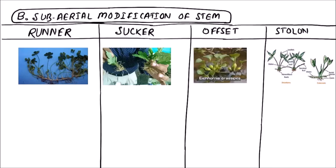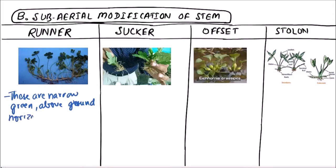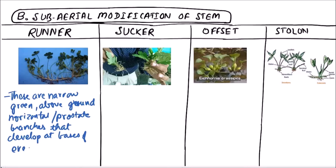First of all, we will discuss the Runner. Runners are narrow, green, above-ground, horizontal or prostrate branches that develop at the base of erect shoots called crowns.